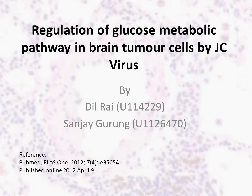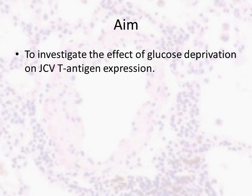Regulation of glucose metabolic pathway in brain tumor cells by JC virus. The aim of the research was to investigate the effect of glucose deprivation on JC virus T antigen expression. Expression of the JC virus early protein T antigen has transforming activity in cell culture and in vivo.